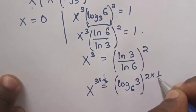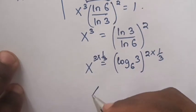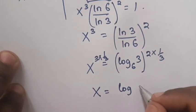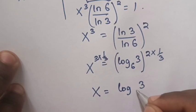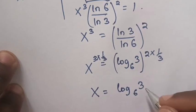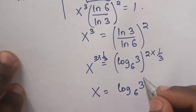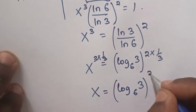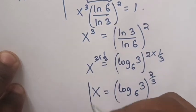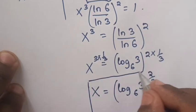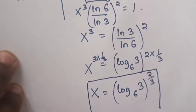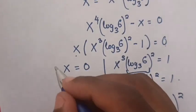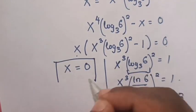When you multiply by the power of 1 over 3 on both sides, 3 and 3 cancel. So x is equal to log 3 base 6 bracket to the power of 2 over 3. This is the value of x, and also x is equal to 0 — don't forget this one.